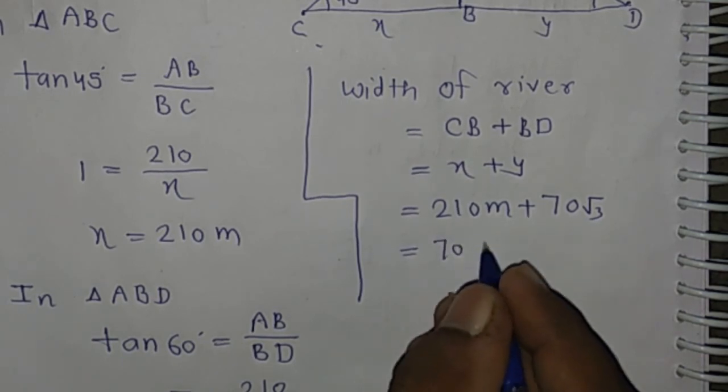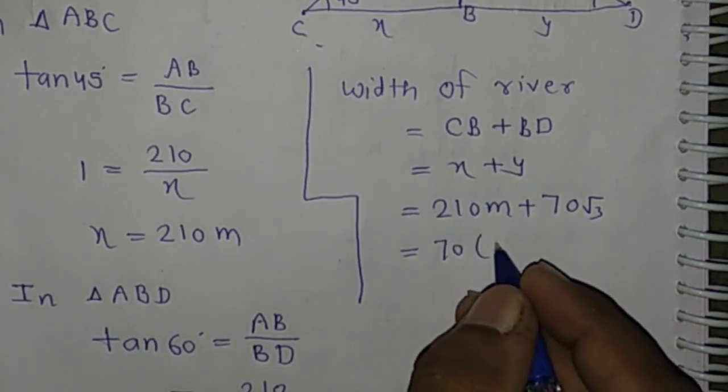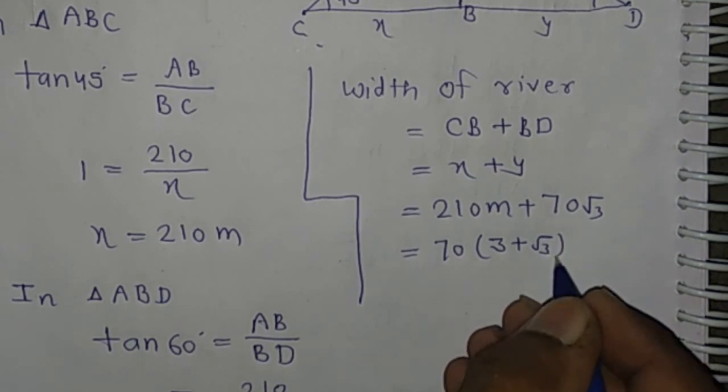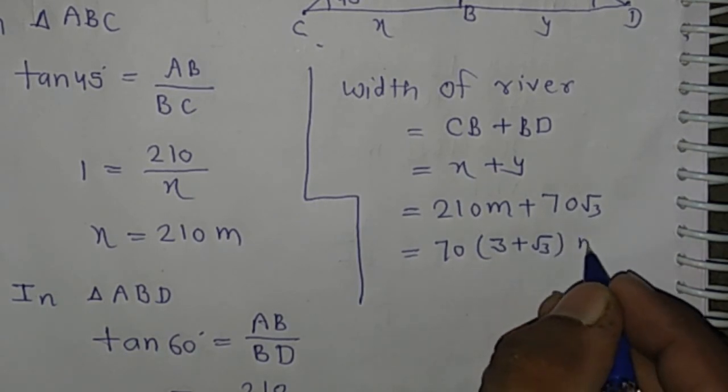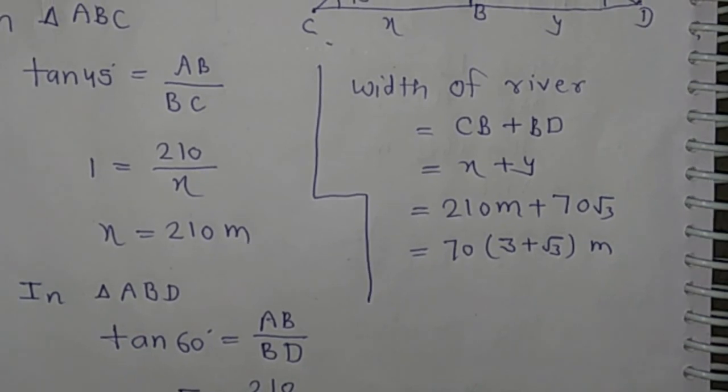Taking 70 as a common factor: 210 + 70√3 = 70(3 + √3). We can substitute the value of √3 to get the required answer.